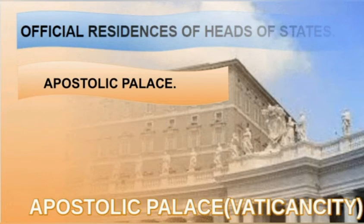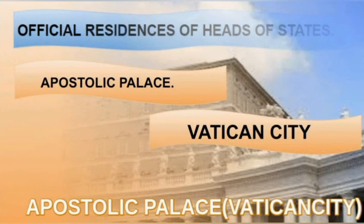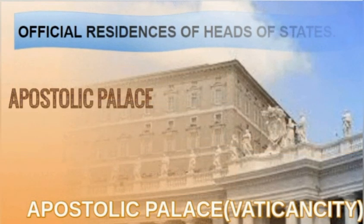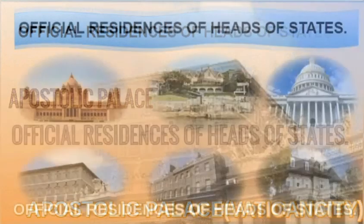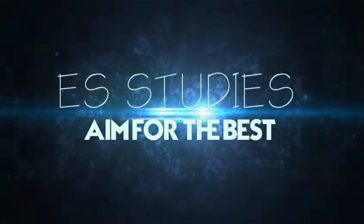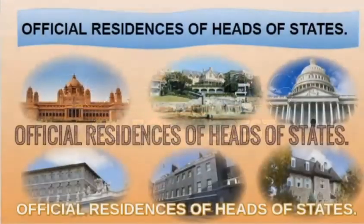The Apostolic Palace in Vatican City is the official residence of the Pope, who is the head of the Catholic Church. This concludes the official residences of heads of states.